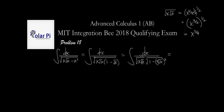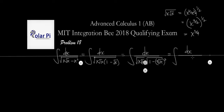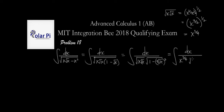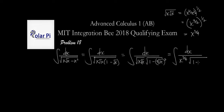What I'm saying is this is x to the three-fourths, so we can write the integral as dx divided by x to the three-fourths, times the square root of one minus the fourth root of x squared. And where to from here is the question.